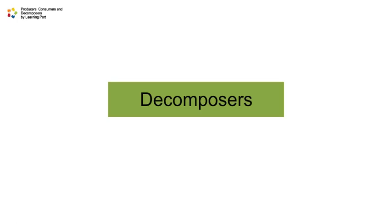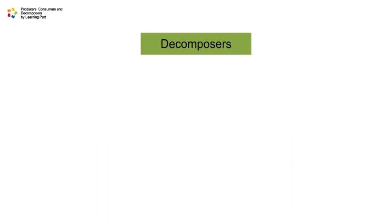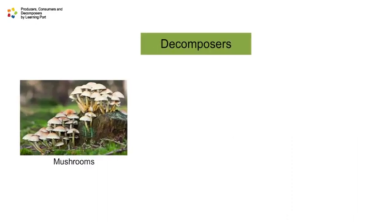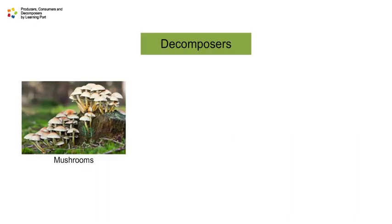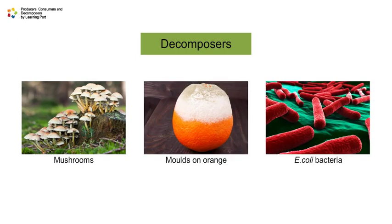Decomposers are organisms that break down dead animals and plants into simpler substances. Some examples of decomposers are mushrooms that grow on decaying wood, molds that grow on food, and E. coli bacteria that break down food in the large intestines of humans.